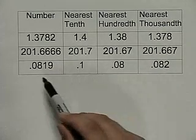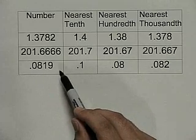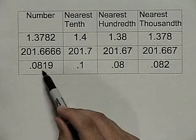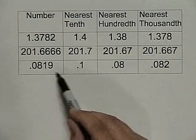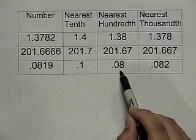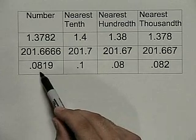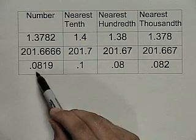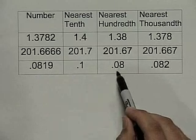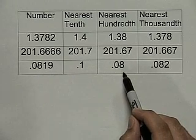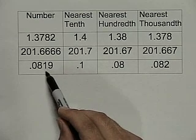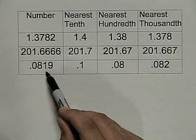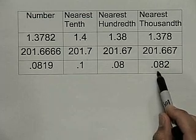The last value is 0.0819. Rounding to the nearest tenth: there's a zero in the tenths position and an 8 to the right, so we round up — 0.08 becomes 0.1. For the nearest hundredth: there's an 8 in the hundredths position with a 1 to the right. Since 1 is less than 5, we don't round up, so 0.0819 becomes 0.08. For the nearest thousandth: the 1 is in the thousandths position with a 9 to the right, which is greater than 5, so we round the 1 up to a 2, giving 0.082.